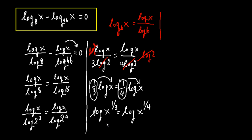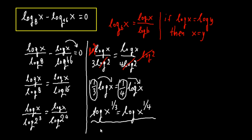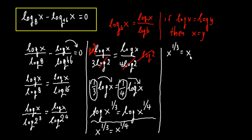Here we have an equation with logarithms. Let me remind you that if log x equals log y, then x equals y. Applying this to our equation, we see that x to the one-third equals x to the one-fourth.